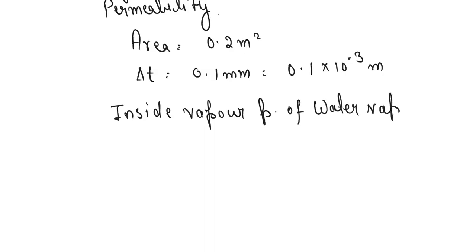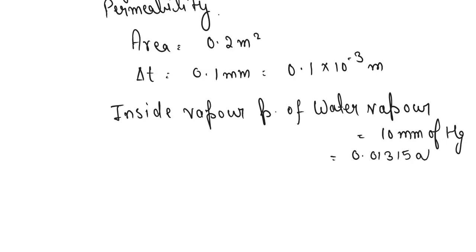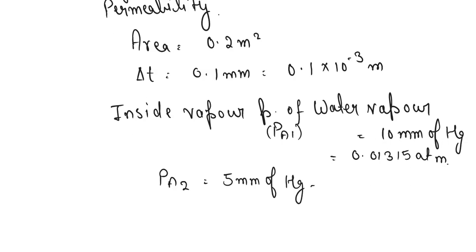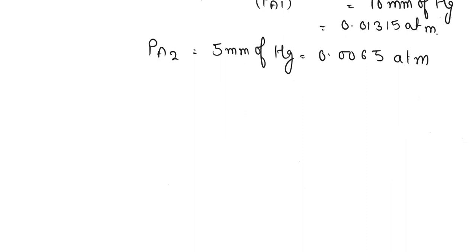Now we find the inside vapor pressure of water vapor, which is given as 10 millimeter of mercury. We convert this to ATM: that is equal to 0.01315 atmospheric pressure. This is the pressure at area 1. The pressure at area 2 is 5 millimeter of mercury, which equals 0.0065 atmospheric pressure.